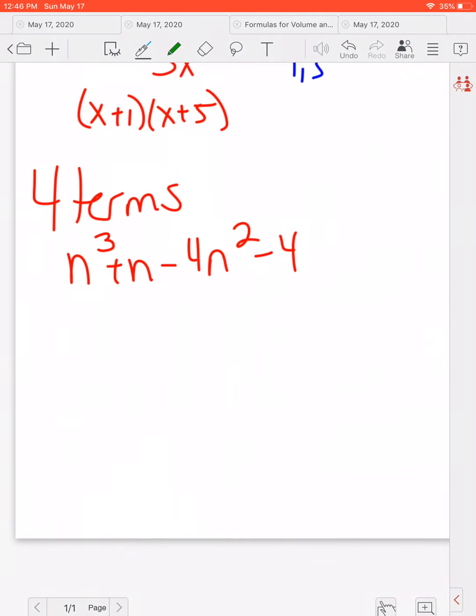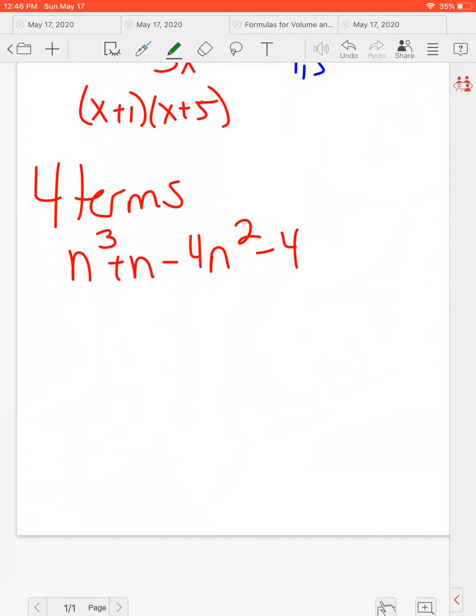Last one is if we have four terms. When we have four terms, we do what we call factor by grouping. So we're going to group the first two terms together and the second two terms together. Notice I took that minus sign with me, and there's really a plus between them now.